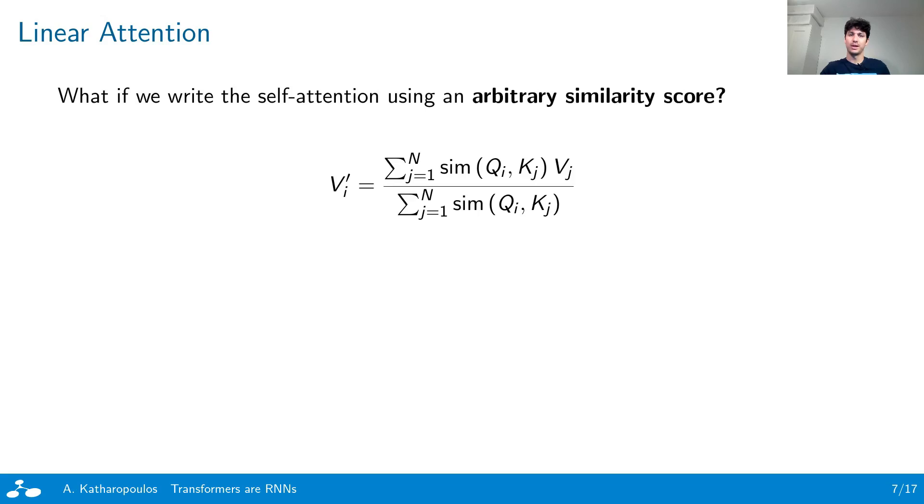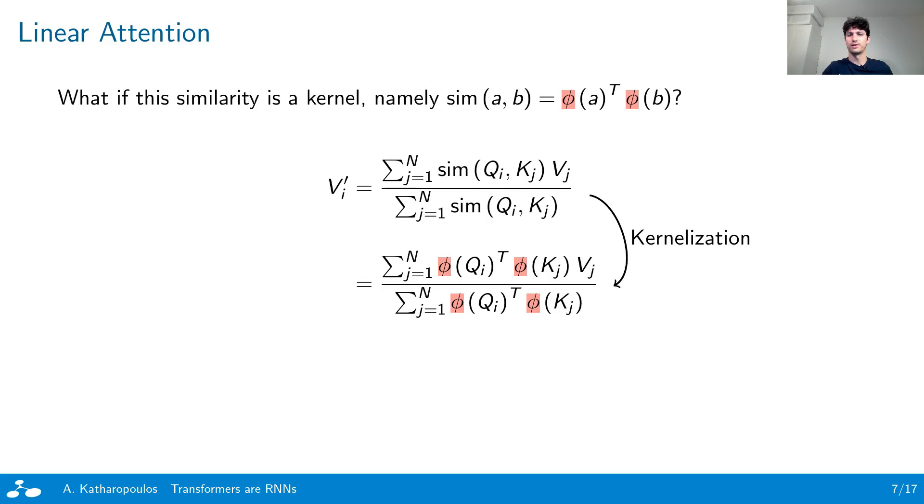To address this computational complexity, firstly, we consider a more general attention that uses an arbitrary positive similarity score instead of the exponential of dot products. This score, with some loss of generality, can be written as a kernel with a feature representation φ. This abstracts away the application of the softmax function and we end up with an attention computation consisting only of dot products.